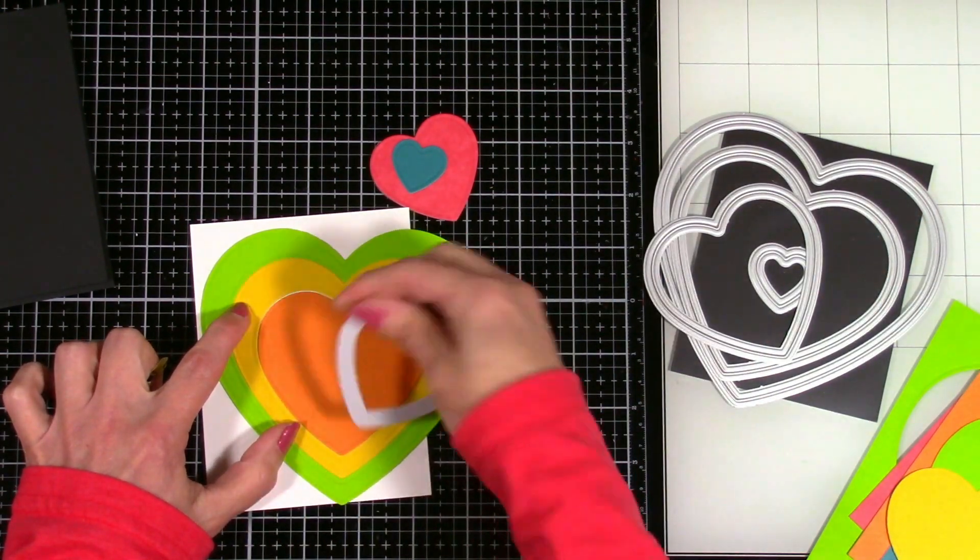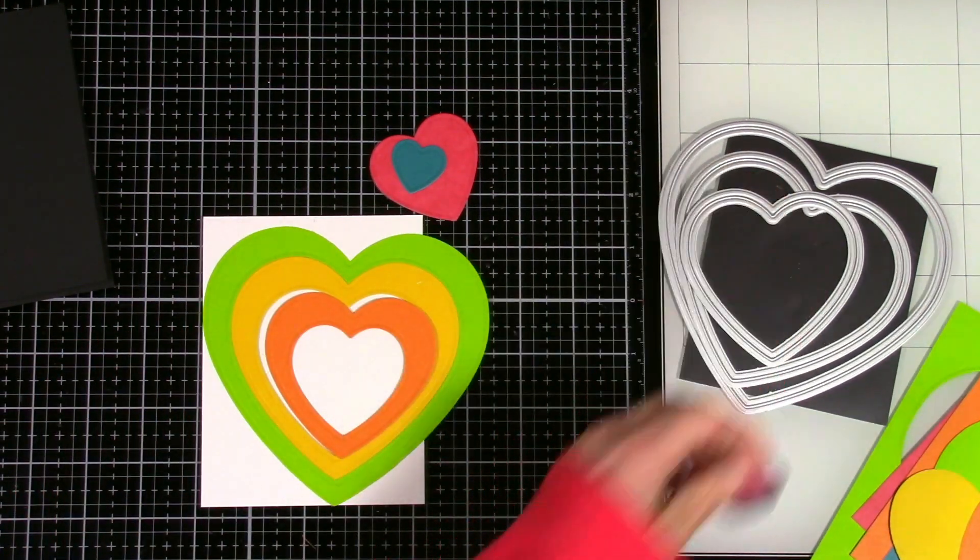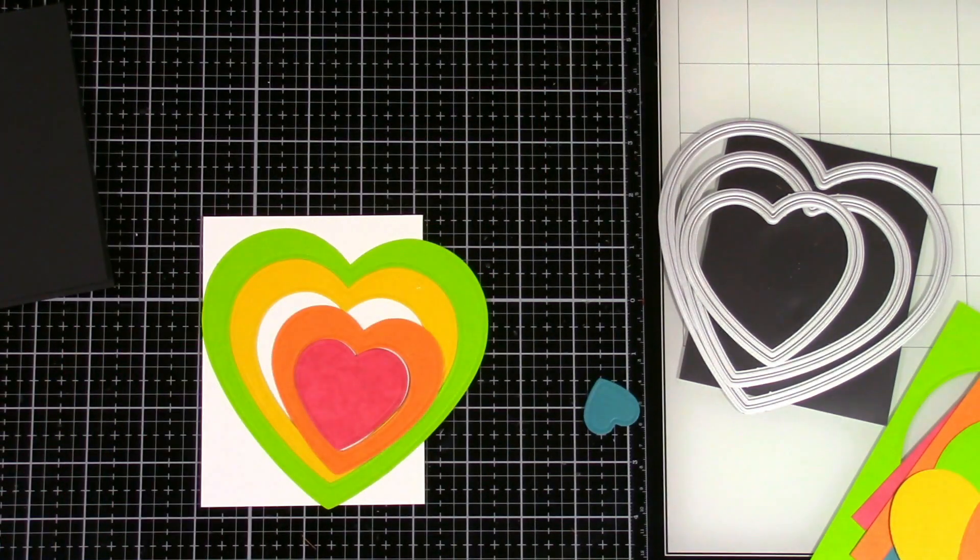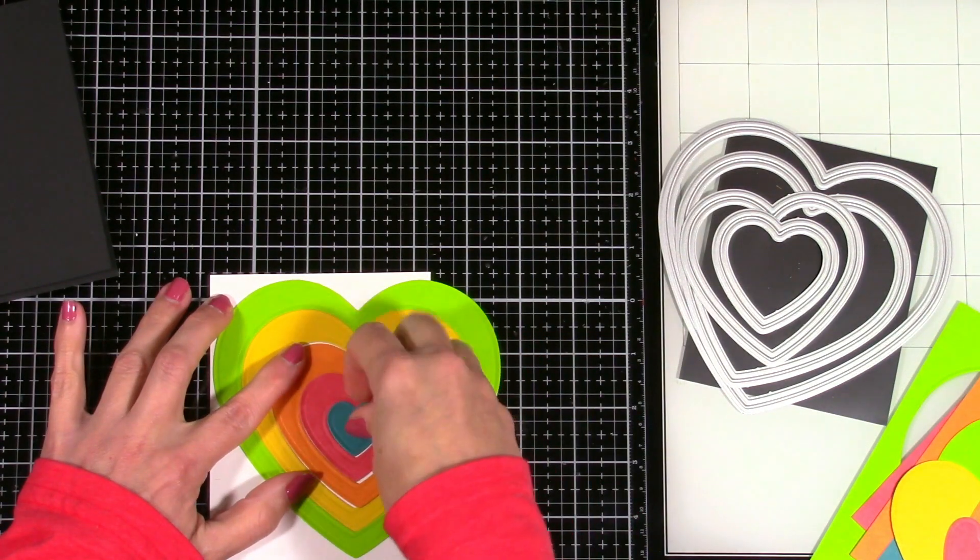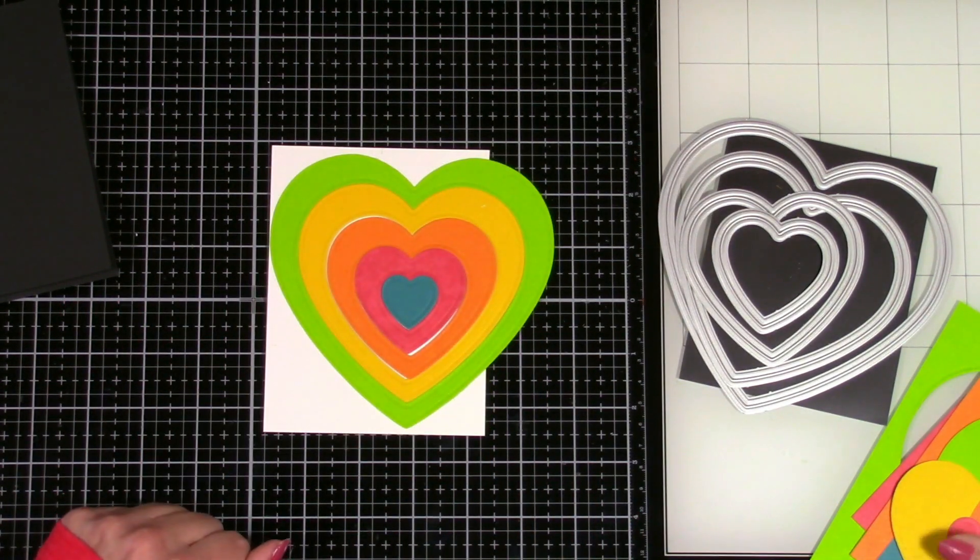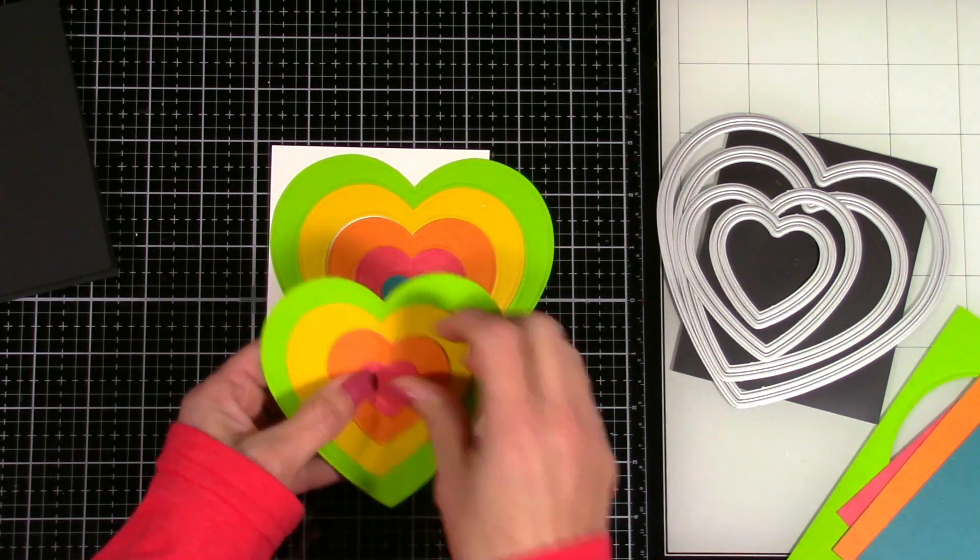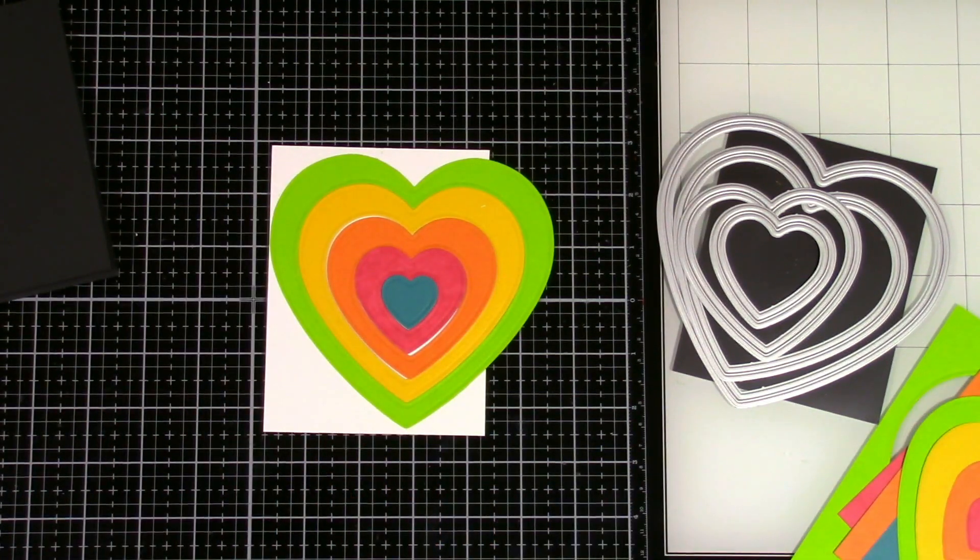This is so easy and so fun to do and a great, it's so colorful. And you can use pretty much any word dies that you have. If you don't have the Lawn Fawn Sayings dies and stamps, that is fine. You use whatever you've got. Anything will work.